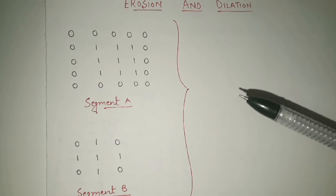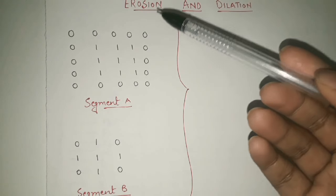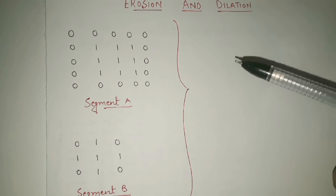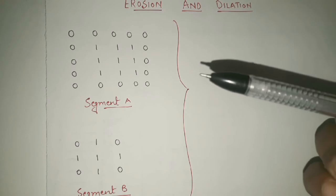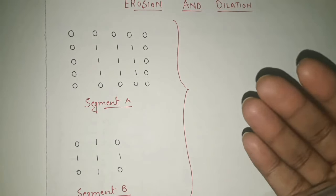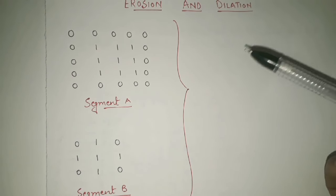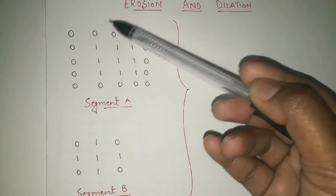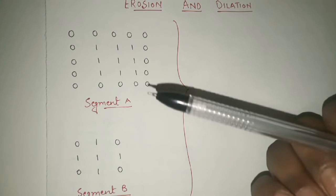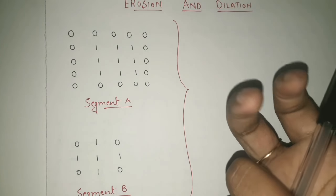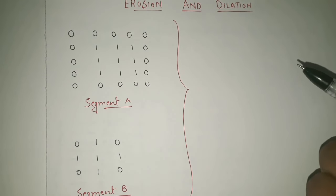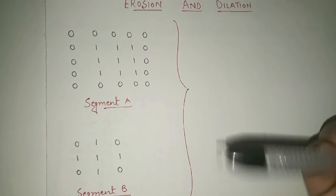In simple words, erosion means, as the name indicates, we are performing operations on an image. You must know that an image is represented digitally in the form of a matrix using binary digits like zero and one. So in simple words, erosion is shrinking the image and dilation is expanding the image.